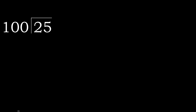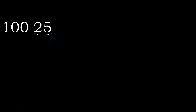25 divided by 100. 2 is less, therefore next. 25 is less, therefore next. That is not a number, therefore complete with 0.